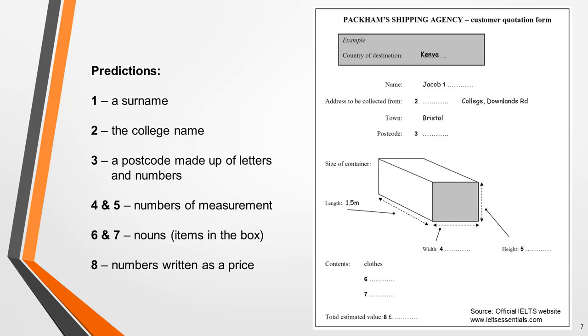Here are the answer predictions we can make. One will be a surname, two will be the college name, three will be a postcode made up of letters and numbers,